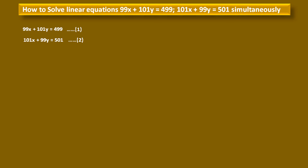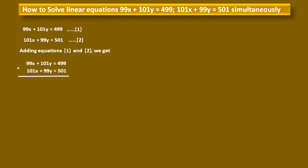First, we add the two equations and then subtract them to get simpler linear equations. Adding equations 1 and 2: 99x + 101y + 101x + 99y = 499 + 501. This gives 200x + 200y = 1000. Dividing both sides by 200, we get x + y = 5. Consider this as equation number 3.